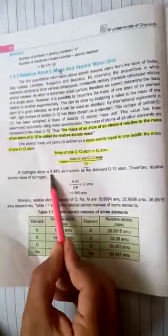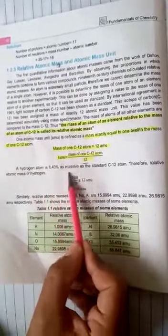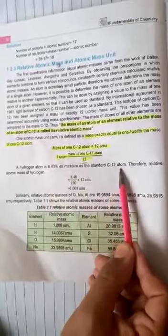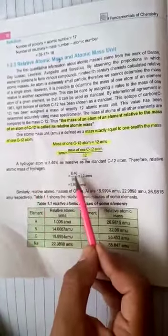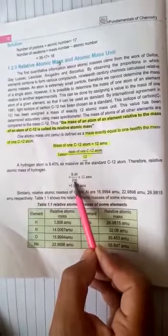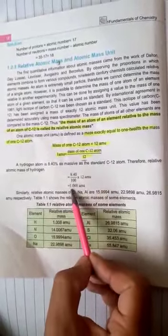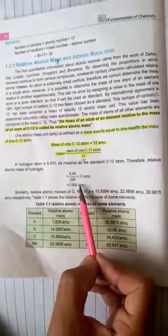Similarly, hydrogen atom is 8.40% as massive as the standard C-12 atom. Therefore, relative atomic mass of hydrogen is 8.40 divided by 100 multiplied by 12. This is 1.008 AMU. Chapter 1, bye-bye.